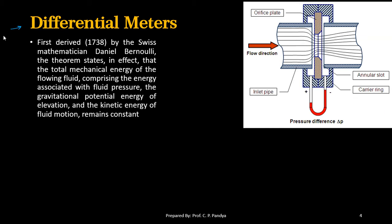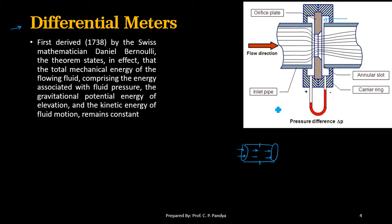Differential meters operate on the principle that if we have a pipe with fluid flowing inside it, and we put any plate inside that pipe which acts as an obstruction to the flow, then it creates a differential pressure. On one side the pressure will be P1, and on the other side of the plate the pressure will be P2. The difference between P1 and P2 is proportional to the magnitude of flow, whether we are measuring flow velocity, quantity, or volumetric rate.